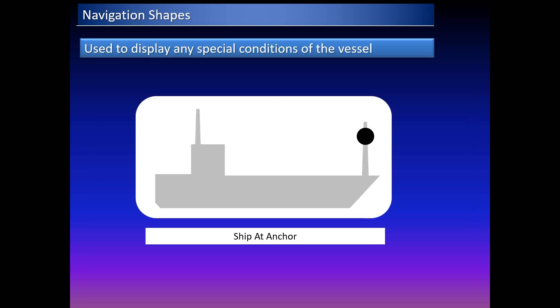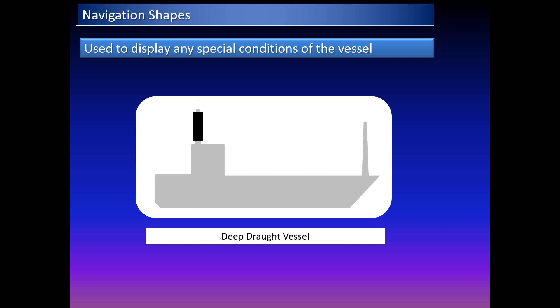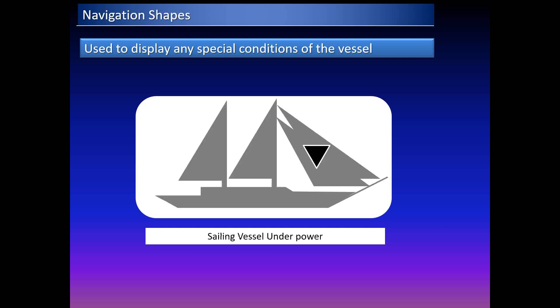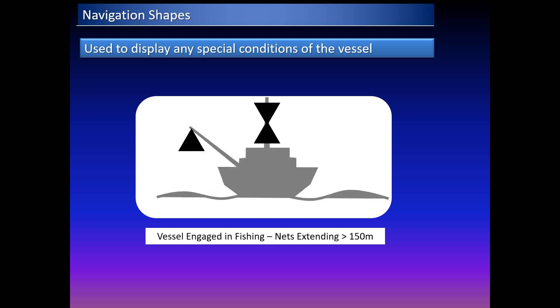Shapes are used to display the condition of a vessel. A black ball indicates a vessel at anchor; a ball, diamond, and ball in series indicate a vessel restricted in ability to maneuver; a cylinder indicates a deep-draft vessel; and a cone indicates a sailing vessel under power. A vessel engaged in fishing displays additional shapes, and an additional cone indicates nets extending greater than 150 meters.